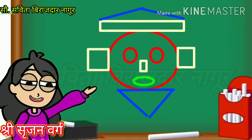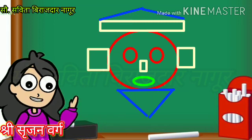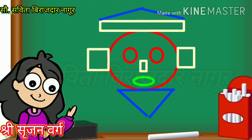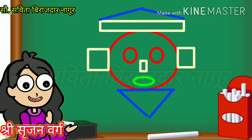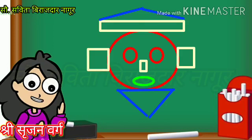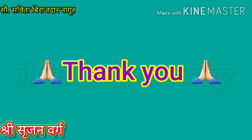Here I have some activity for you. Draw the given picture in your notebook. Count and write how many triangles, squares, rectangles, and circles it has. Then color: circles with blue, triangles with red, rectangles with yellow, and squares with green. Who will complete it first? Thank you.